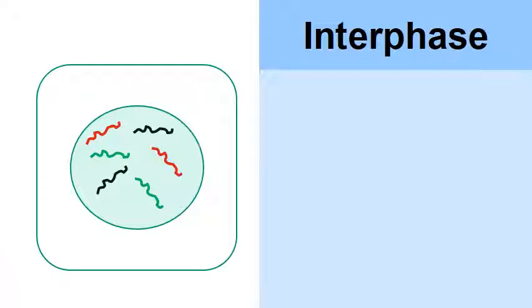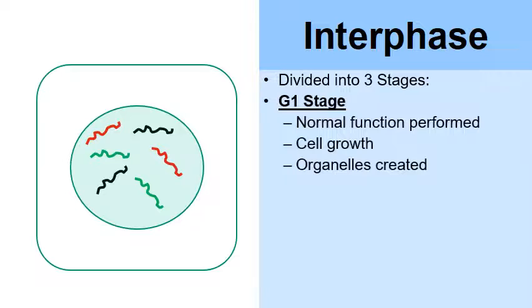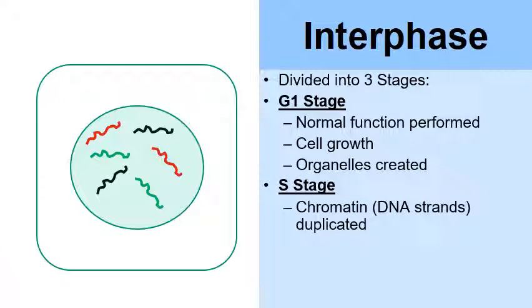Interphase is divided into three sub-stages. The first is the G1 stage — G stands for growth or gap. This is where the normal functions of the cell are performed; for example, a stomach cell secretes digestive enzymes. The cell then begins to grow, creating additional organelles such as ribosomes and lysosomes, preparing for division.